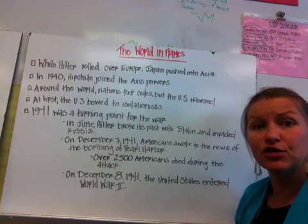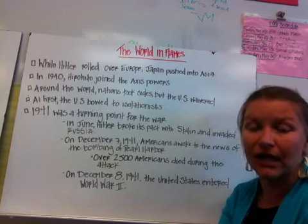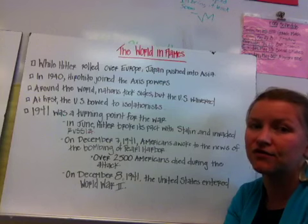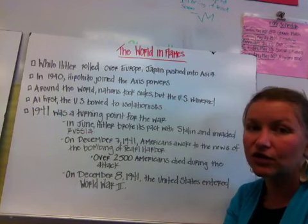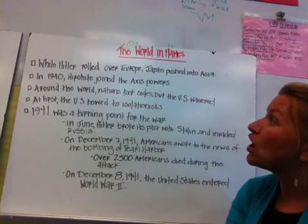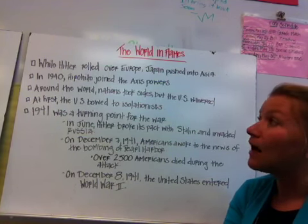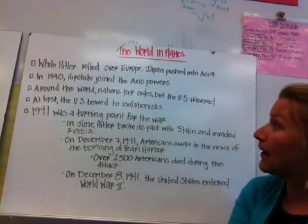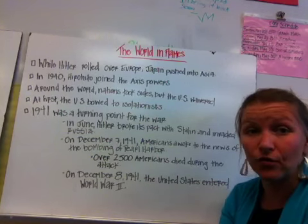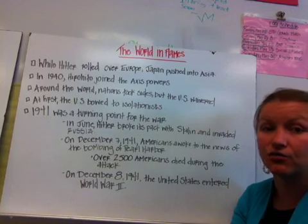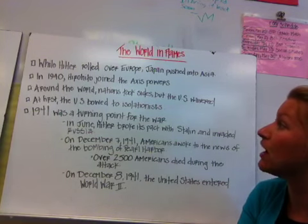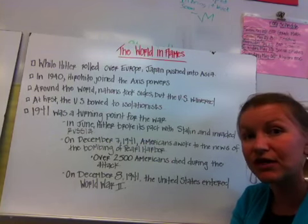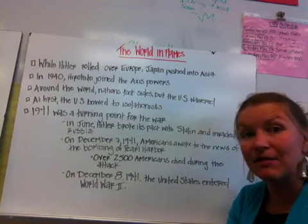Hitler progressed throughout Europe quickly — taking over Poland, which caused great concern for the Allies, then moving into France, which is when the United States really started paying attention. By 1940, Hirohito and Japan joined the Axis powers, making this a true world war as more countries began to take sides. Still, the United States really wanted to remain neutral and keep its isolationist policy.